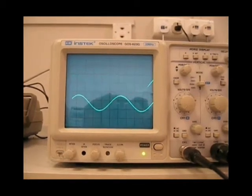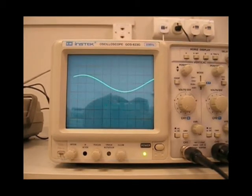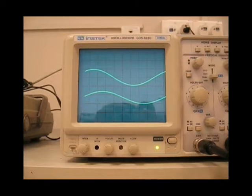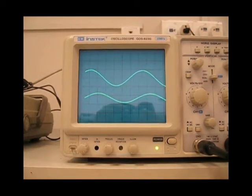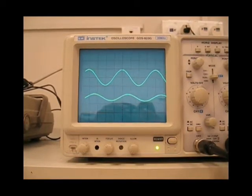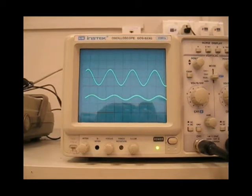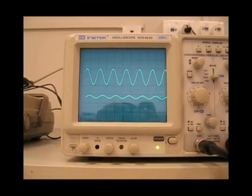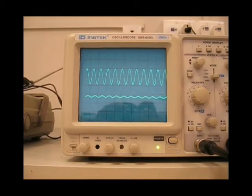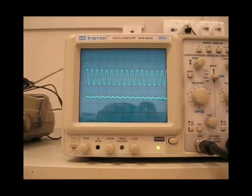We then reduce the frequency to 1 kilohertz. The output signal is almost the same as the input signal in terms of amplitude. Then we increase the frequency to over 1 kilohertz, the amplitude is reduced. We reduce the frequency further and there is nearly no signal left.